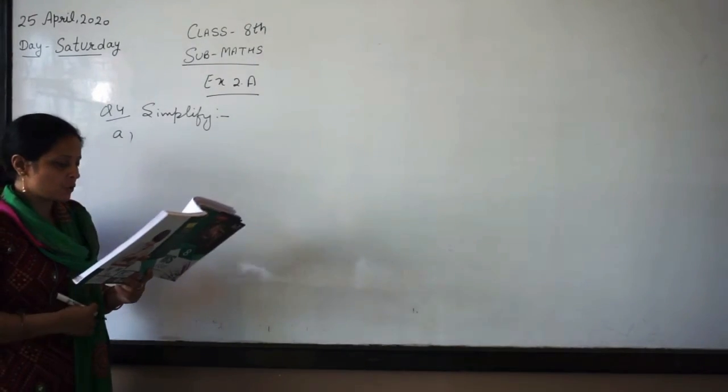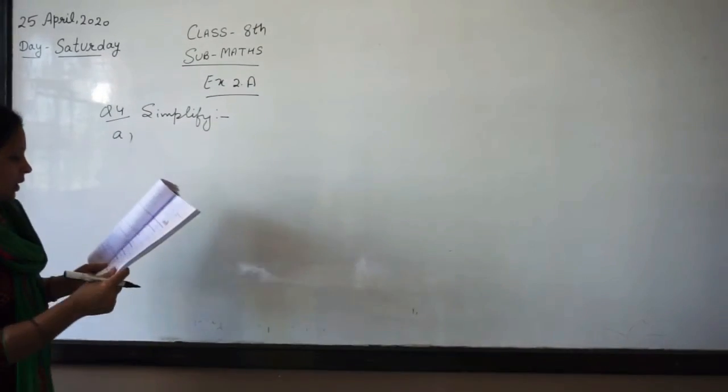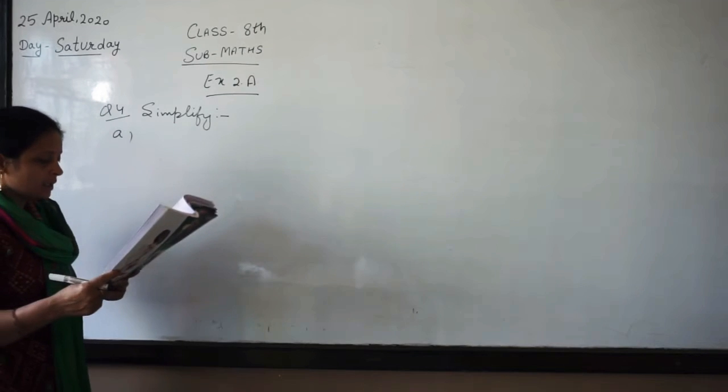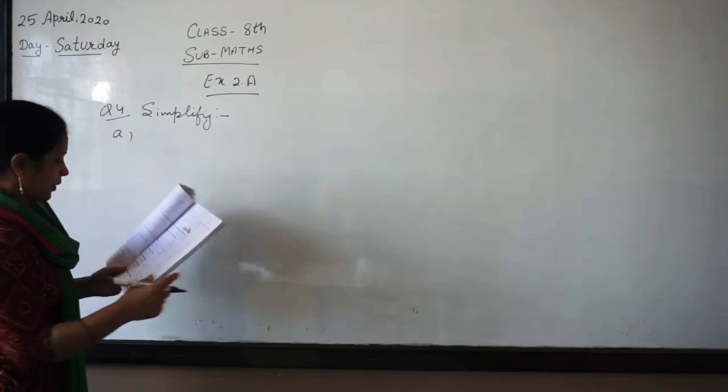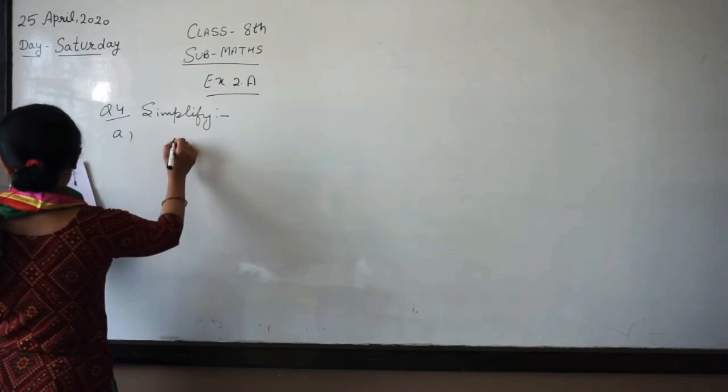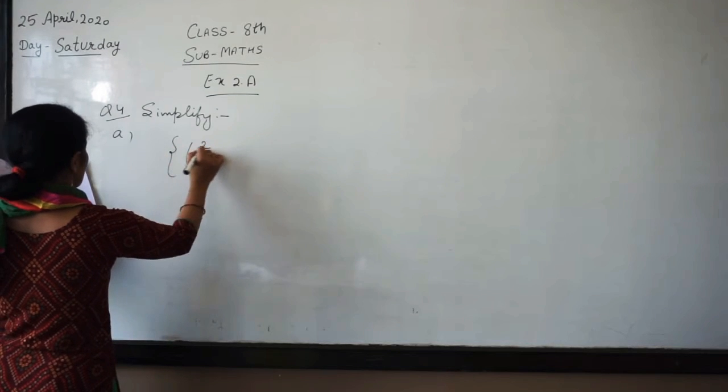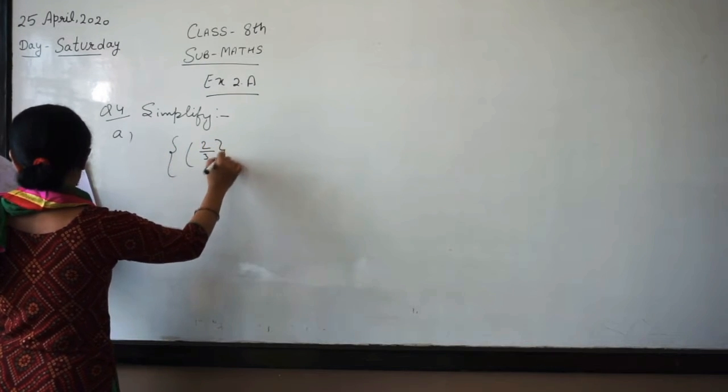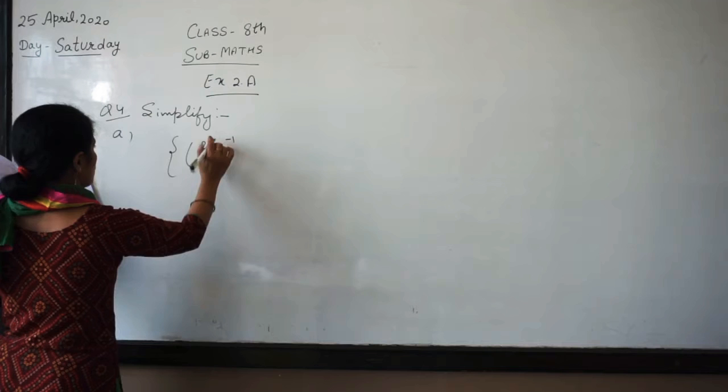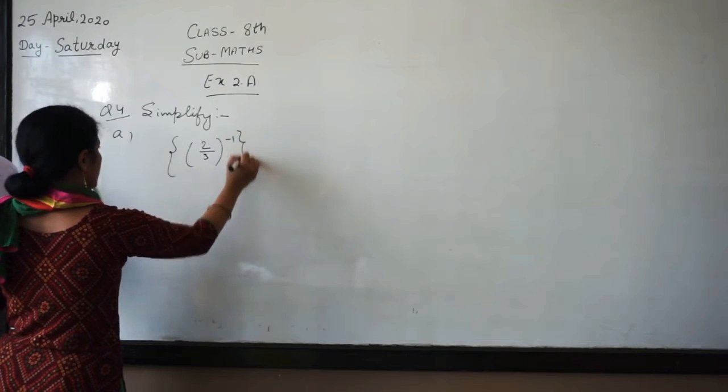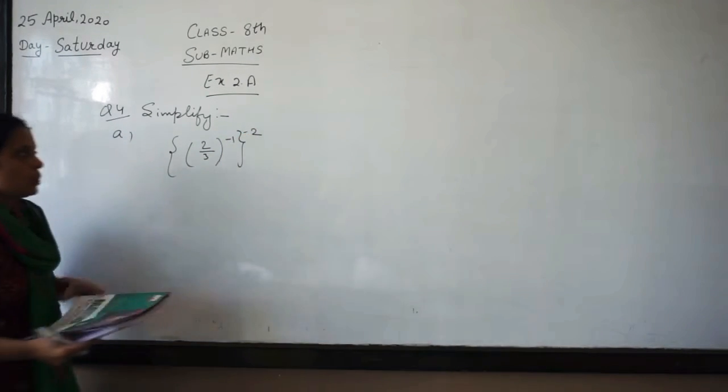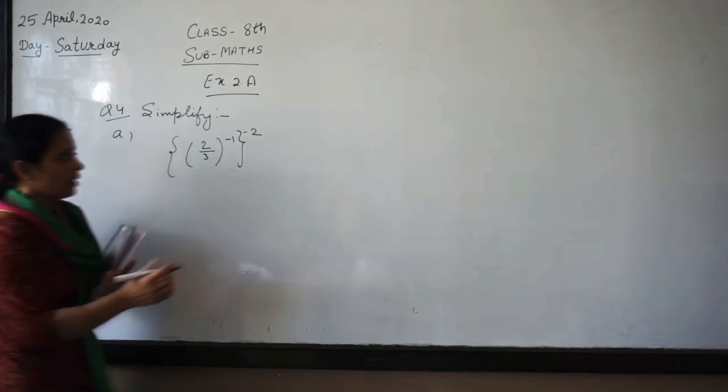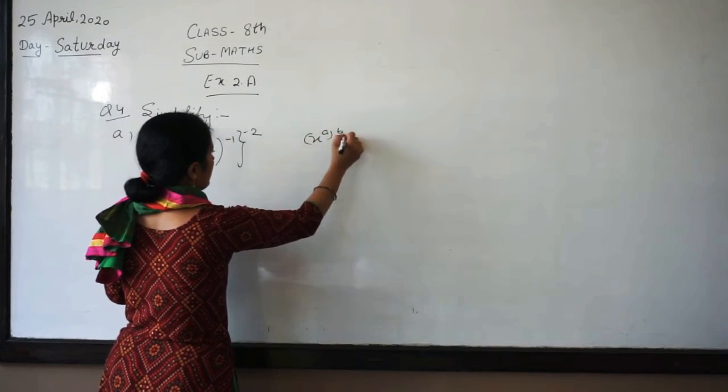Last exercise, question number four, question number three, question number four, which one is 2 by 3. So this is R-2. This value is the value of X to power a and b.